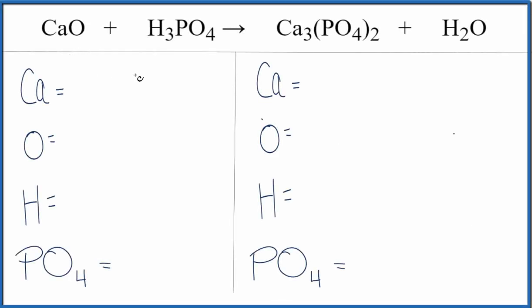So in this reaction, we have calcium oxide reacting with phosphoric acid. Let's count the atoms on both sides of the equation. I have one calcium, one oxygen, and let's leave our PO4 phosphate ion for later. I have three hydrogens and one phosphate ion, this PO4 here.